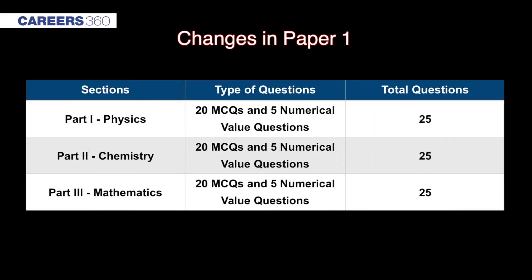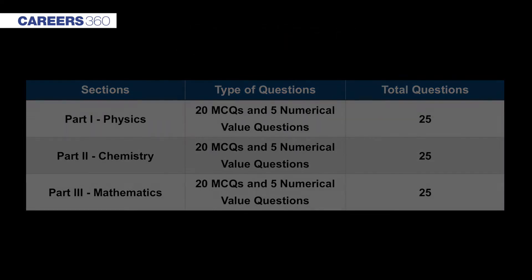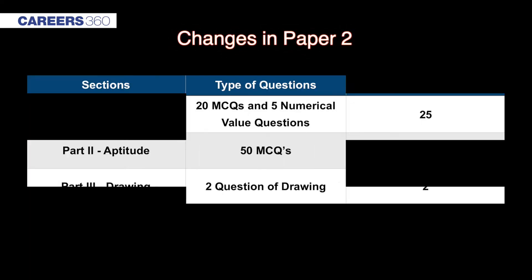The first major change that NTA has introduced is the reduction in the total number of questions. JMain Paper 1 for the B.Tech course will now have a total of 75 questions — 25 each from Physics, Chemistry, and Mathematics. Out of these 25 questions in each subject, 20 questions will be multiple choice questions, while the remaining 5 questions will have answers as a numerical value.